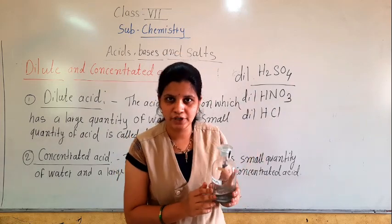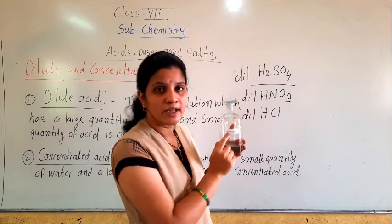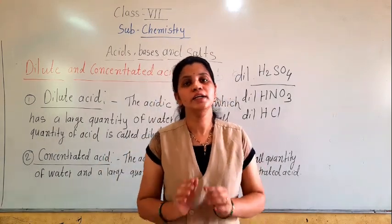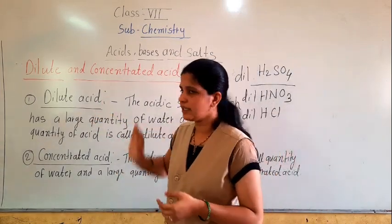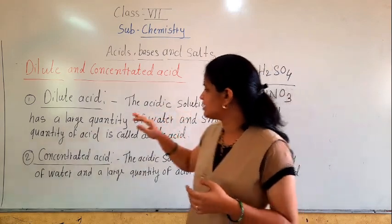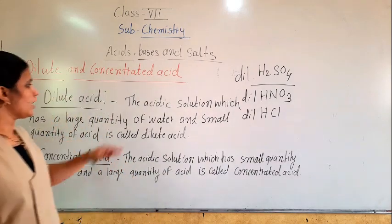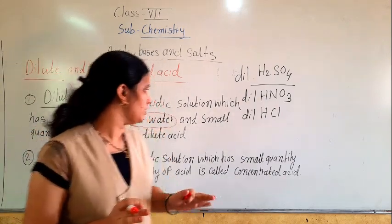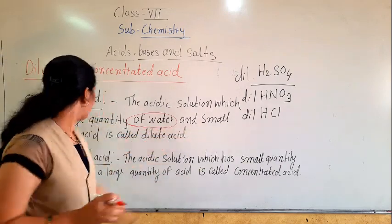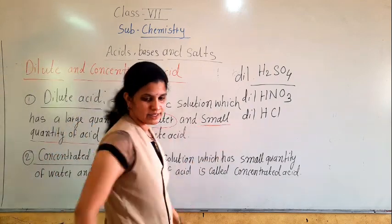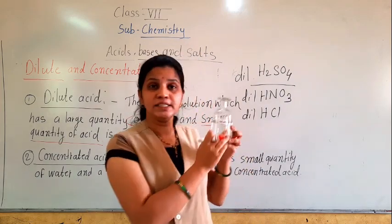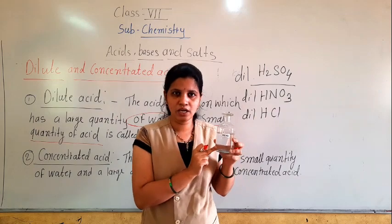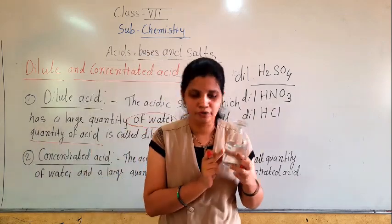So like this, bottles are there in our chemistry lab, and the labeling 'DIL' means dilute — it is not a strong acid. Because these are diluted acids. A diluted acid is an acidic solution which has a large quantity of water and small quantity of acid. So it is known as a dilute acid, like dilute hydrochloric acid.